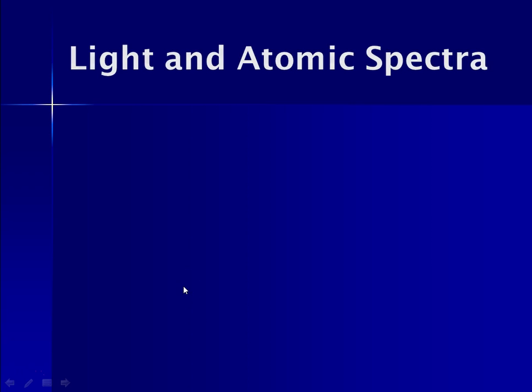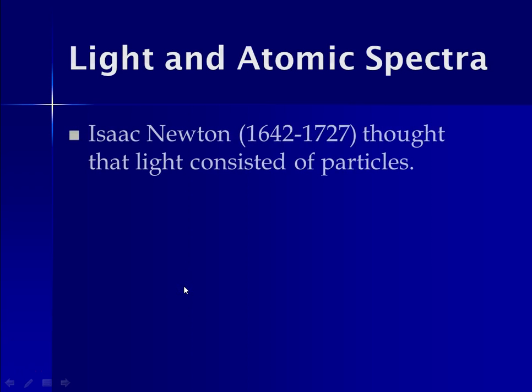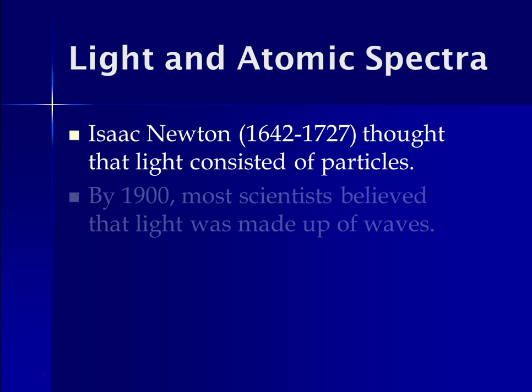So in this part of the chapter, we talk about light and atomic spectra. In the late 1600s, early 1700s, Isaac Newton, you remember him, the gravity guy, thought that light consisted of particles. But by about 1900, most scientists believed that light was made up of waves.